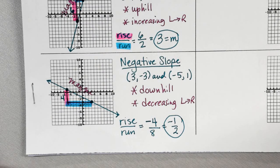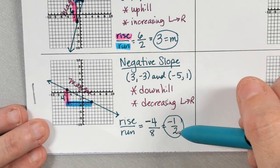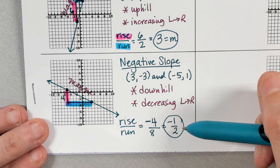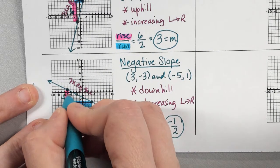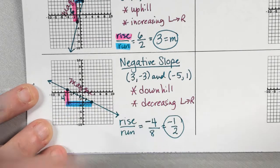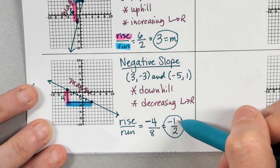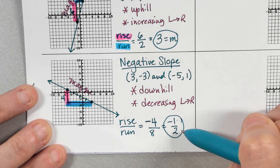In my calculator: negative four over eight reduces to negative one half. So the slope of this one is negative one half — you can also put negative 0.5. But since slope tells us how to move, if we leave it as a fraction, I can find any point on the line by going down one, right two.